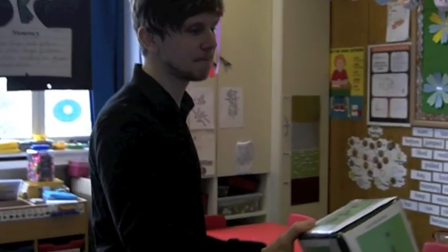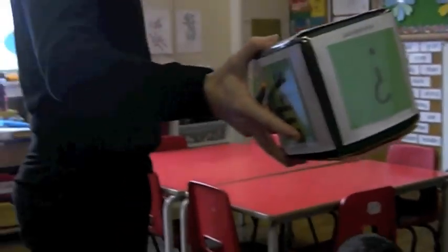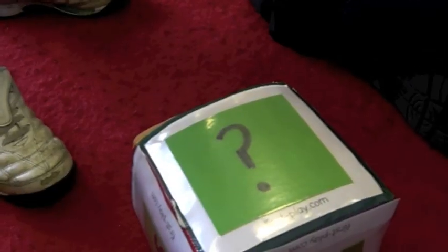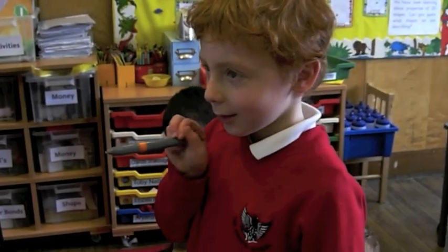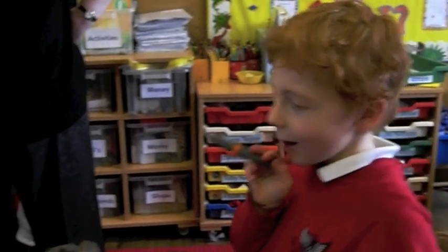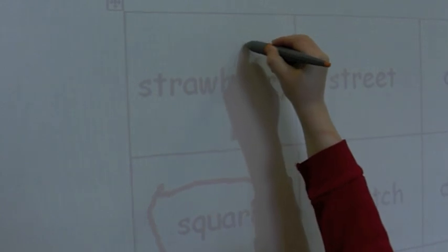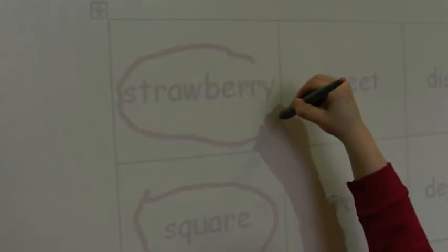Who would like to have a go for the red team? Toby. Come and get the phonics die. Here we go. Let's put a ring around a word of your choice because you've got the question mark — think about trying to get three in a row. What word is it, Toby? Strawberry. Strawberry. Well done. Good boy.